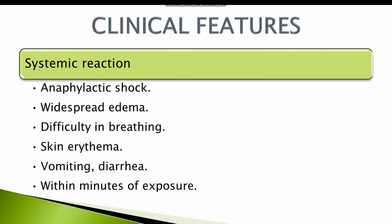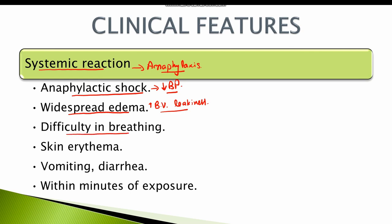Type 1 hypersensitivity reaction can also be systemic, meaning it involves the complete body. It is known as anaphylaxis and results in anaphylactic shock, characterized by decreased blood pressure. There is widespread edema due to generalized increased leakiness of blood vessels, difficulty in breathing due to edema of the respiratory tract, and skin erythema with hives. Vomiting and diarrhea can also be present, and symptoms typically appear within minutes of exposure. Anaphylactic reaction constitutes a medical emergency.